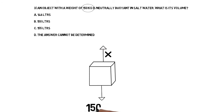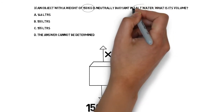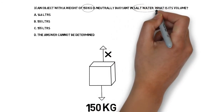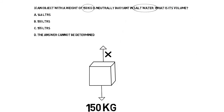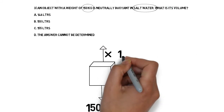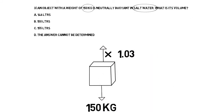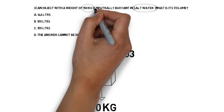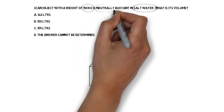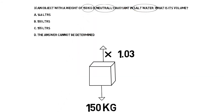The weight of the object, according to the question, is 150 kilograms. The type of water it's in is salt water. One litre of salt water weighs 1.03 kilograms. We can enter those numbers in.